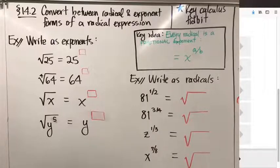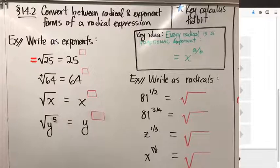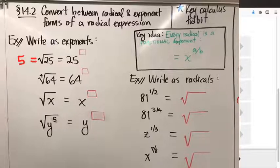First, I want to ask the obvious question: what is the square root of 25? It's 5. The less obvious question is: how do we know? Why is the square root of 25 equal to 5? Because 5 times 5 is 25.